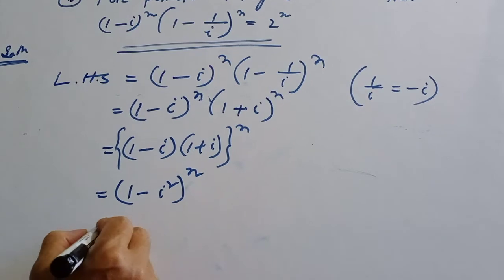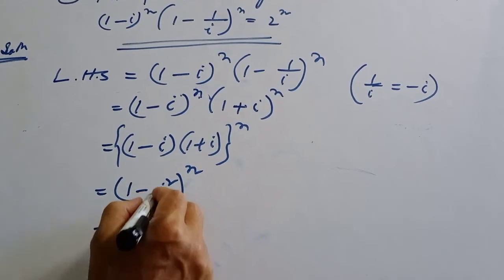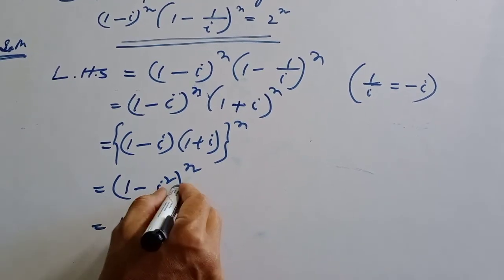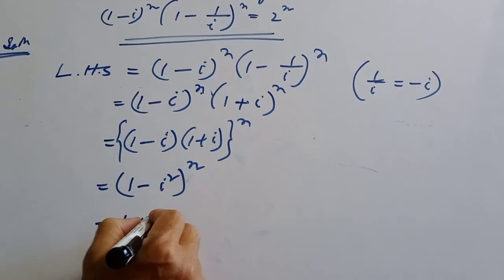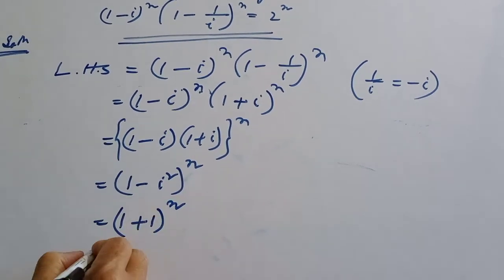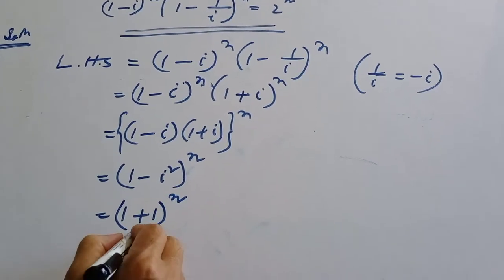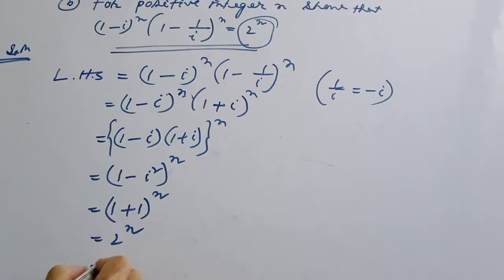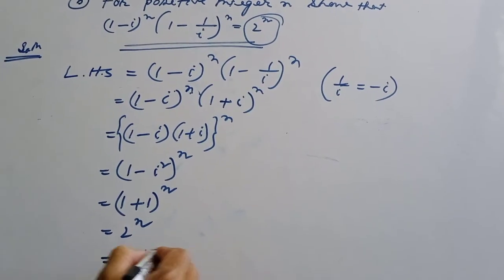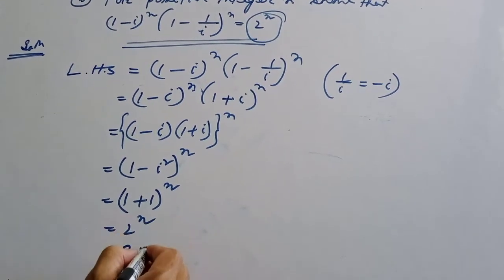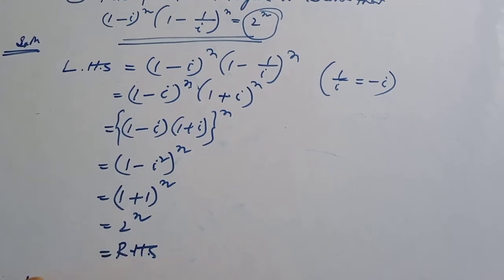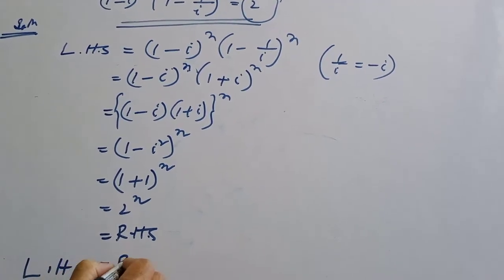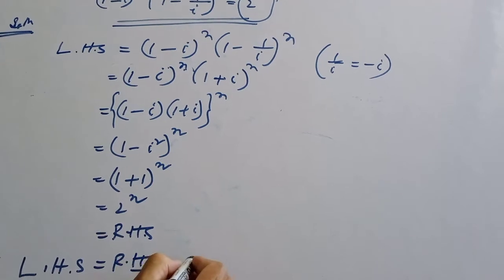Using the a minus b times a plus b identity: (1 - i²) whole to the power n. Since i² = -(-1) + 1, this equals 2 to the power n. So the right-hand side also equals 2^n, thus left-hand side equals right-hand side. Proof complete.